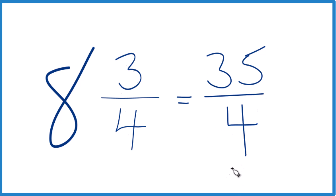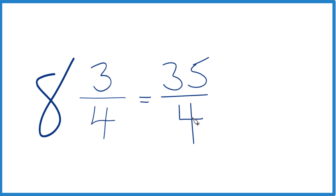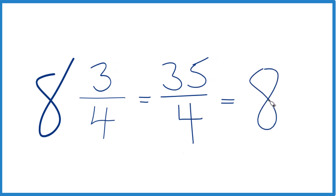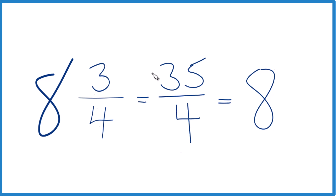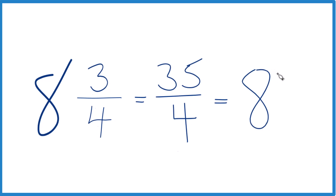You can even check your work, because 4 goes into 35 — 4 times 8 would be 32, then we'd have 3 left over. Bring the 4 across, and we get 8 and 3 fourths. That's the same thing we started out with.